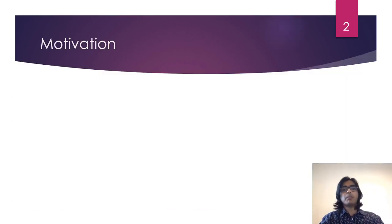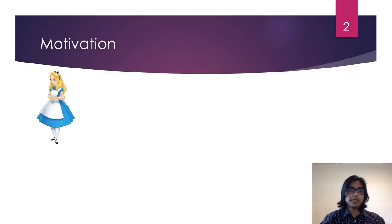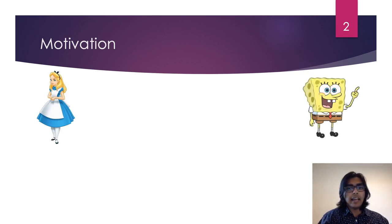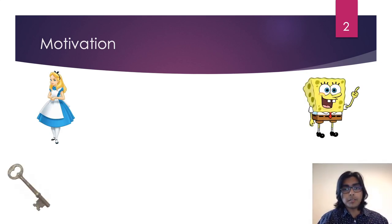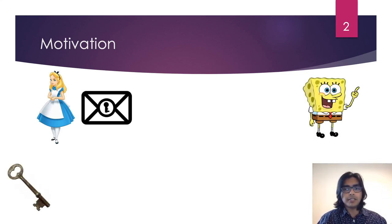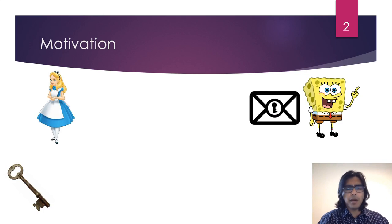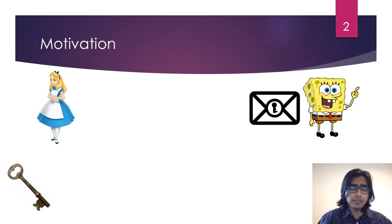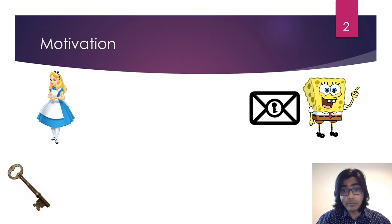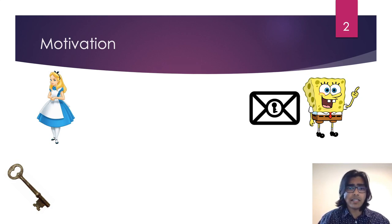Let's start by considering the typical scenario of an encryption scheme. Alice encrypts some message with a key and sends the resulting ciphertext to Bob. If Bob has the key, he can decrypt the ciphertext to retrieve the original message. Now let us suppose that Bob has received the ciphertext from Alice but does not yet have the key to decrypt it.